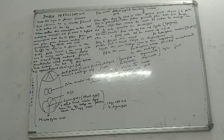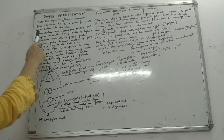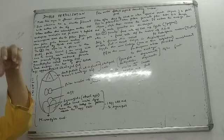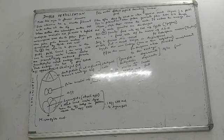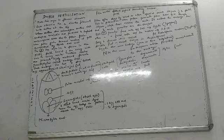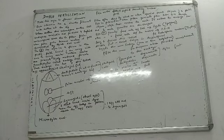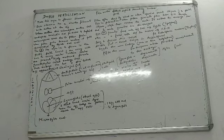Let me start from the simplest part so that you don't have any confusions. You know that the male sex organ in a flower is the stamen. Each stamen has a thin slender filament, and at the tip it has an anther. In this anther, some cells get differentiated and become special cells known as microspore mother cells (MMCs).